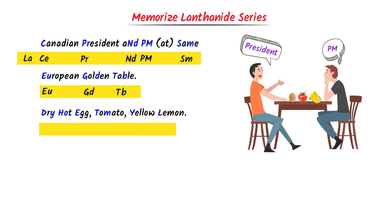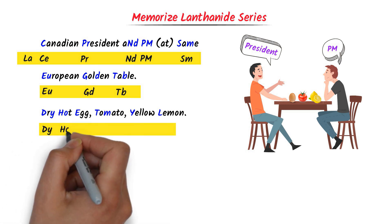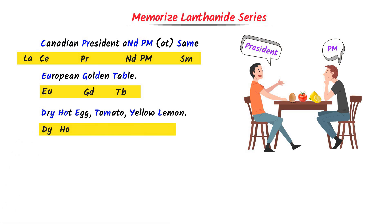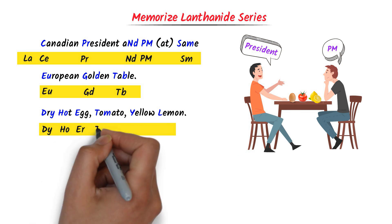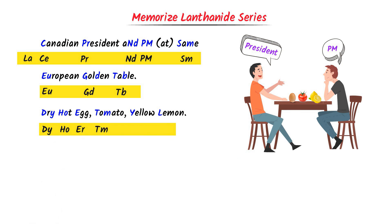DY in Dry stands for Dy, HO in Hot stands for Ho, ER in Eggs stands for Er, TM in Tomato stands for Tm, Y in Yellow stands for Yb, and L in Lemon stands for Lu. This is the complete Lanthanide series.